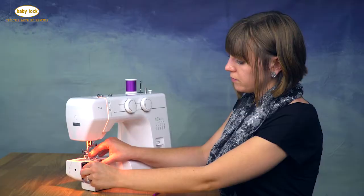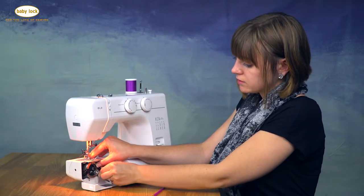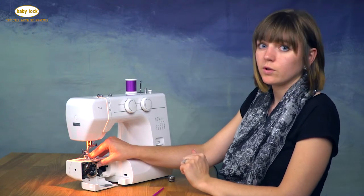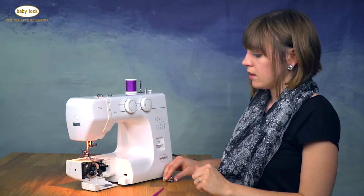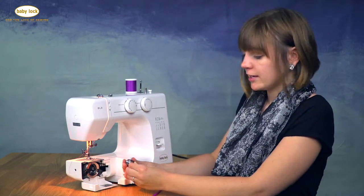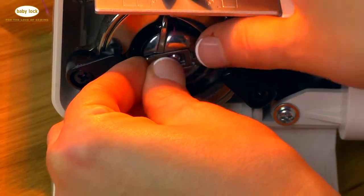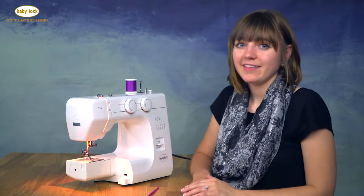Then you turn the black knobs back over the buttons to hold it in place. And then we can put our bobbin back in. That's how easy it is to clean the bobbin case on the BL-9.